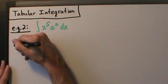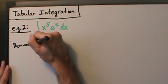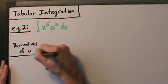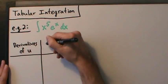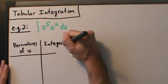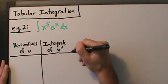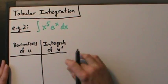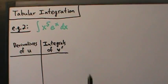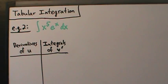We have two columns: derivatives of u, and then integrals — or anti-derivatives, whichever you prefer — of v'. Remember, v' is just dv but without the dx on it. Tabular integration really just is repeated integration by parts.